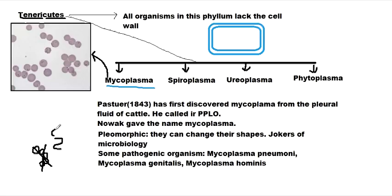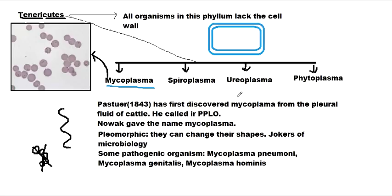Spiroplasma moves in a helical pattern, like that of DNA. It rotates as it moves. This is difficult to draw in 2D but it moves in a helical pattern by rotating. It doesn't cause many diseases in humans, although there is a debate that Spiroplasma may cause spongiform encephalopathy.